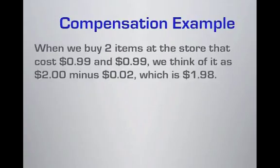So for example, when we buy two items at the store and the cost is 99 cents and 99 cents, we think about it as often times 2 dollars and then we subtract 2 cents, which is $1.98. That would be one simple example of compensation. We added two pennies but then we had to subtract those two pennies because we know that we just can't simply change the quantity of these numbers that we're adding. We need to go ahead and adjust so that we're actually being true to the quantities.